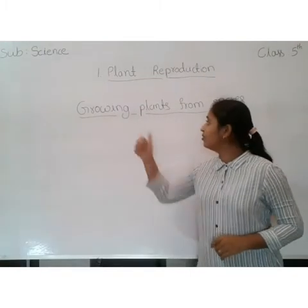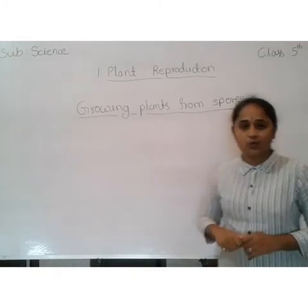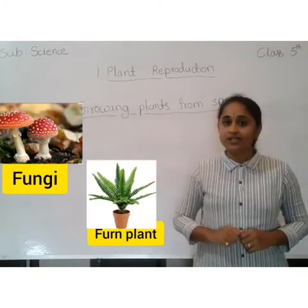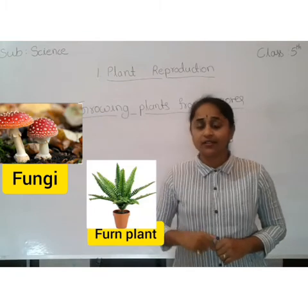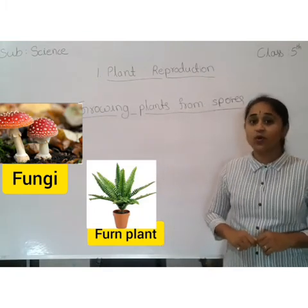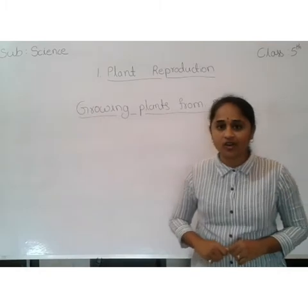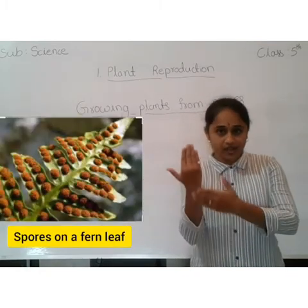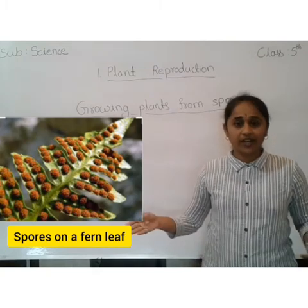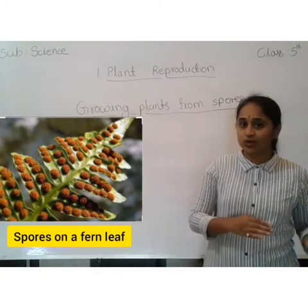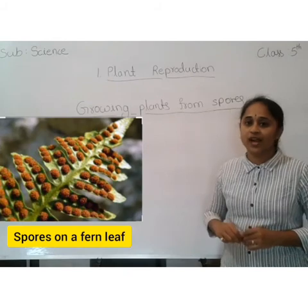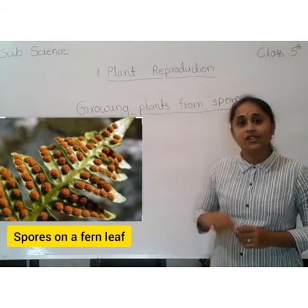Growing plants from spores: fungi and ferns do not have seeds. They have a tiny structure called spores. Spores are found on the underside of the leaves. Fungi, mushrooms, and ferns are reproduced with the help of spores.